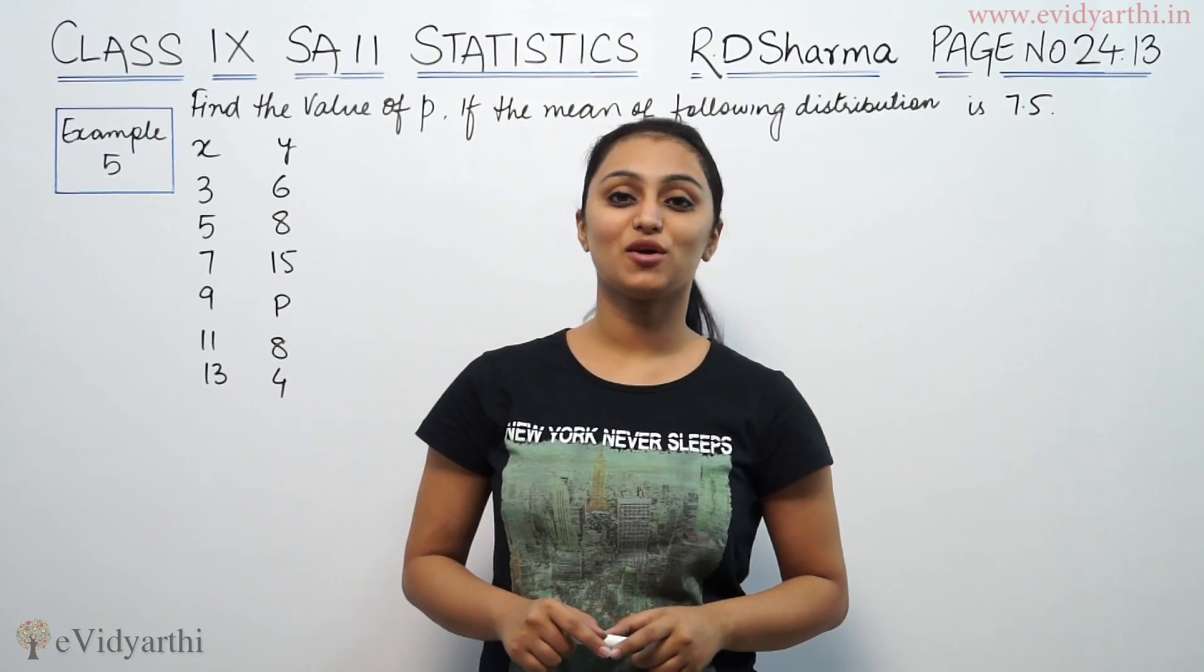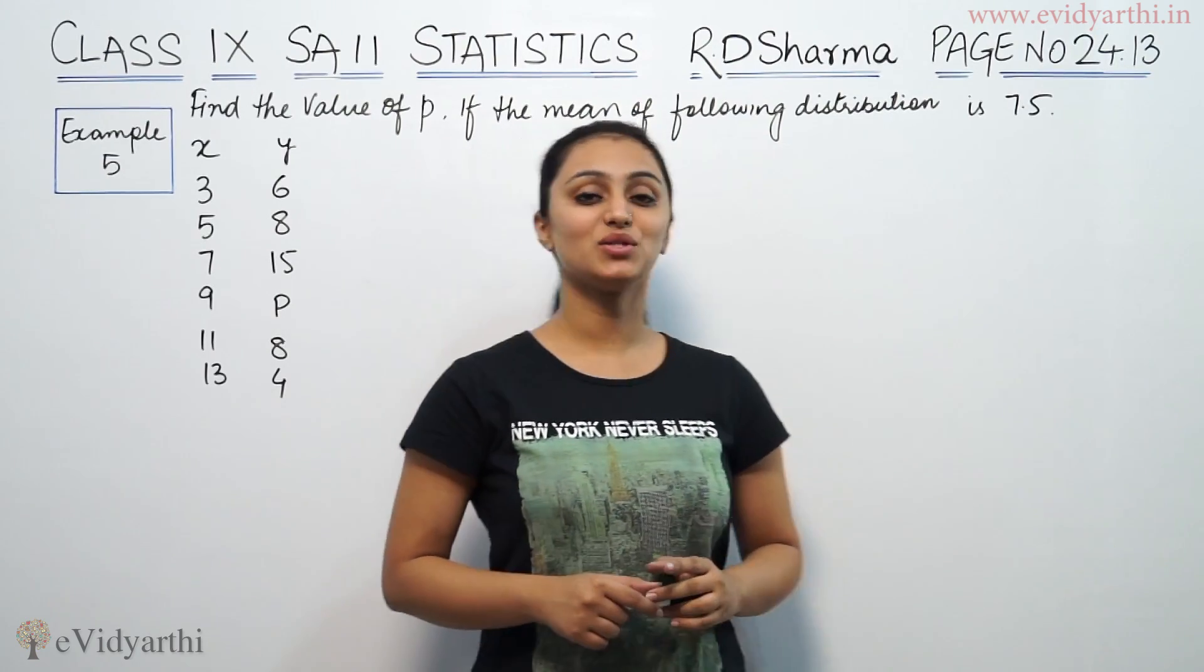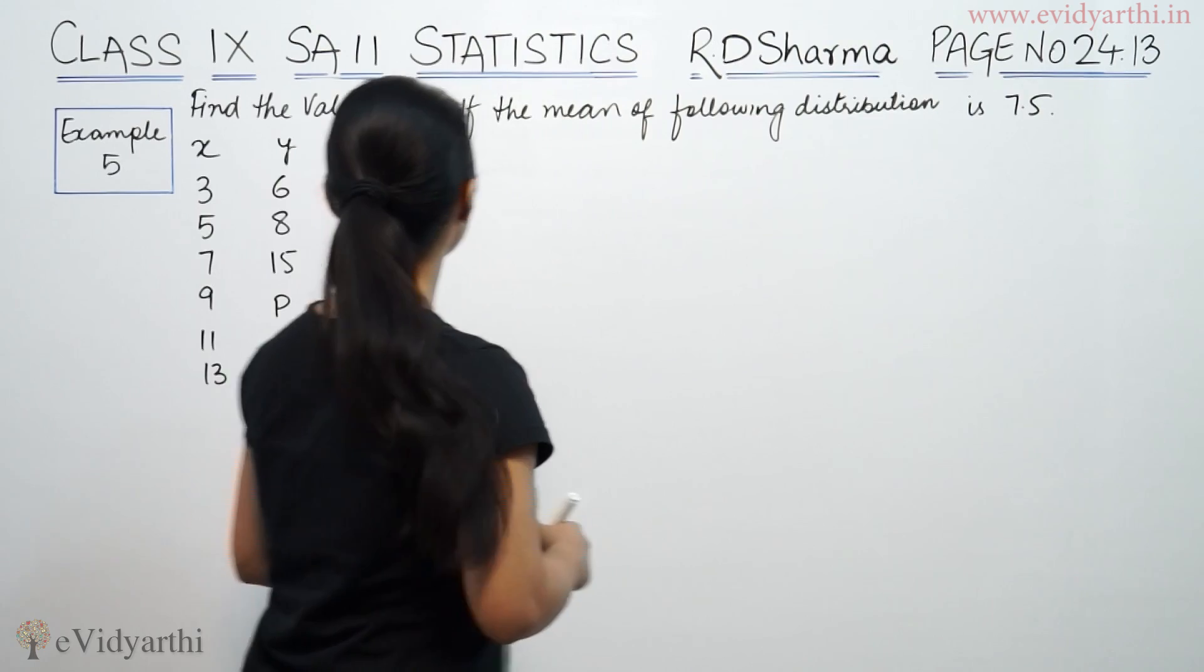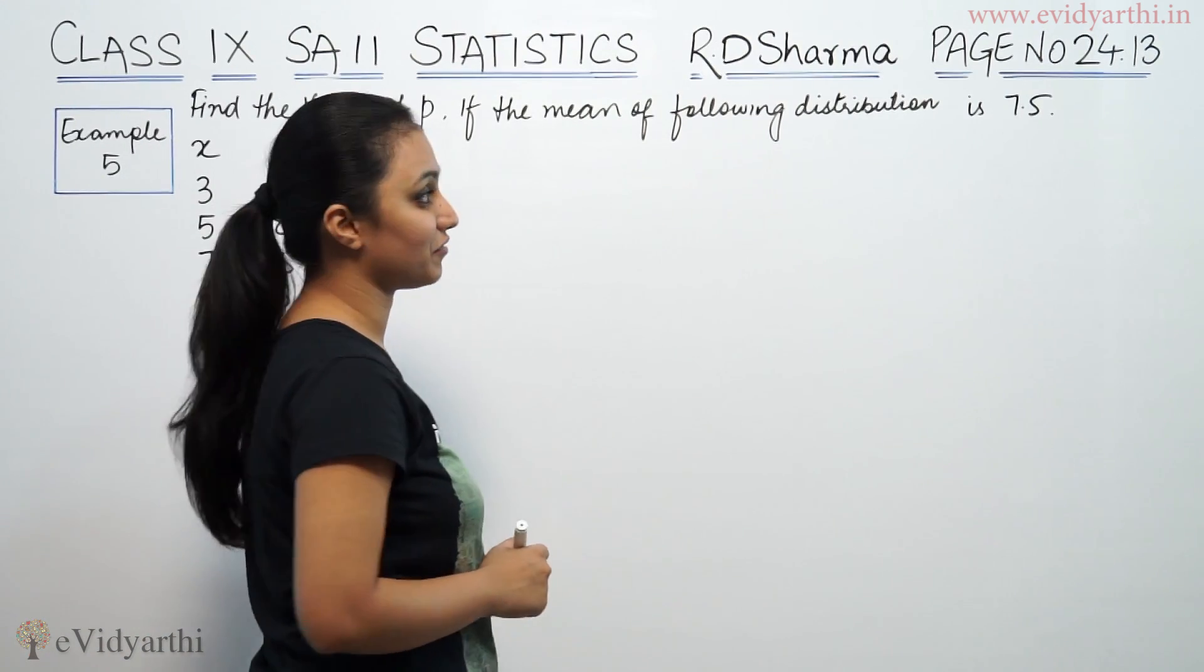Hi, this is Khushbu with another question of 7.6, this is example No. 5 from R.D. Sharma page No. 24.12. It says find the value of P if the mean of the following distribution is 7.5.